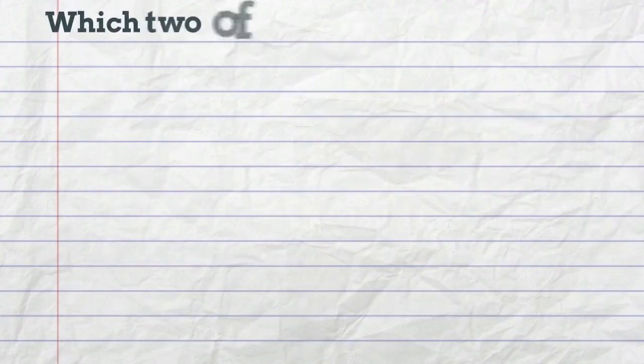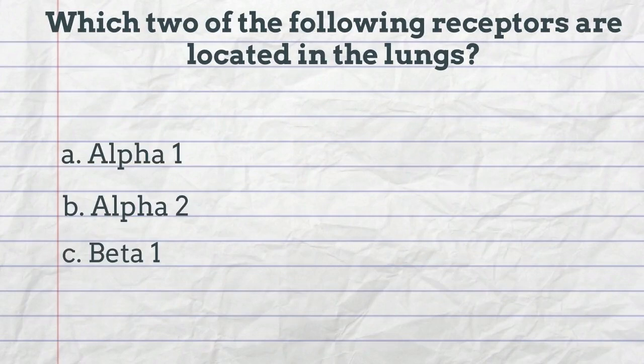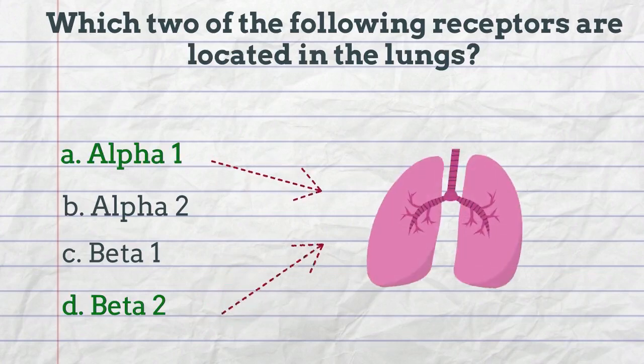Which two of the following receptors are located in the lungs? Alpha-1, alpha-2, beta-1, beta-2. Of these receptor sites, the alpha-1 and beta-2 receptors are the two types of receptors that are located in the lungs.